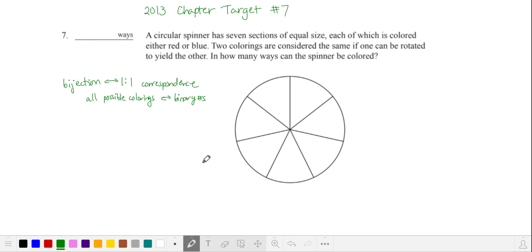This problem suggests a correspondence between the number of all possible colorings and binary numbers. The reason you might see this is that each section can be colored either red or blue. So we have two choices for each section of our spinner and we can think of each of these sections as a digit in a seven-digit binary number.